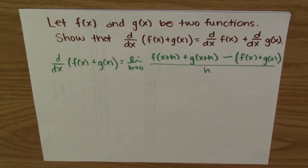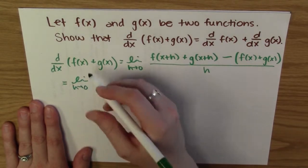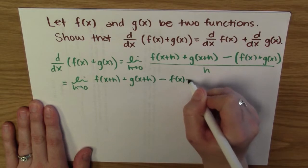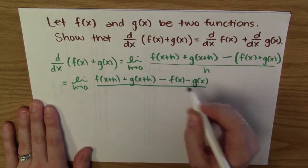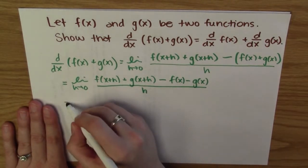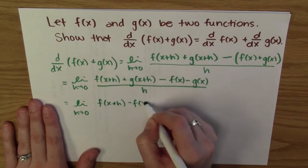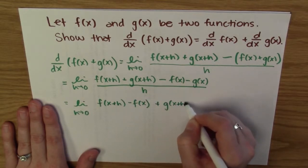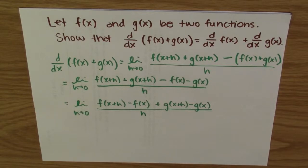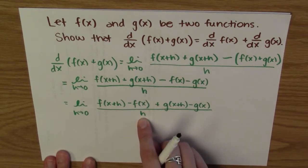Let's do a little bit of algebra. I can simplify by distributing the negative sign, so I have the limit as h goes to zero of f(x+h) plus g(x+h) minus f(x) minus g(x), all over h. Now I have the limit as h approaches zero of f(x+h) plus g(x+h) minus f(x) minus g(x), all over h.